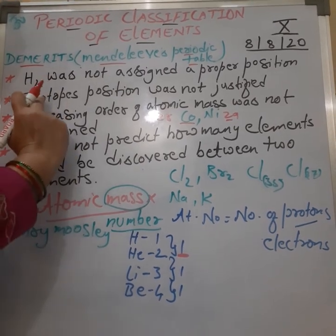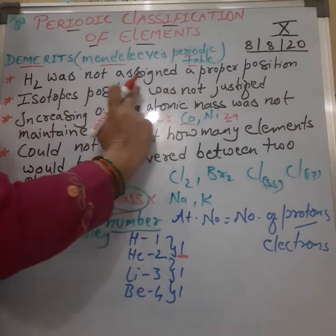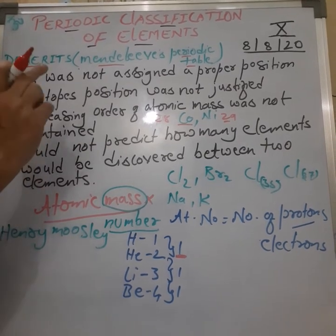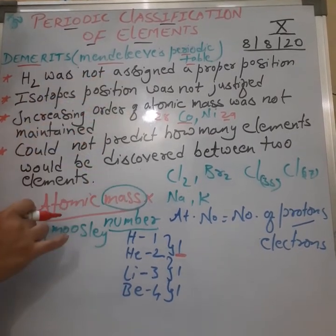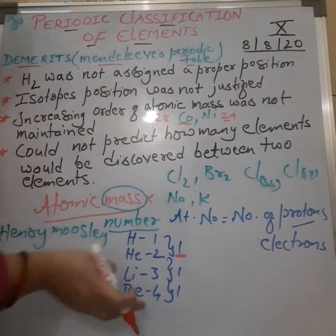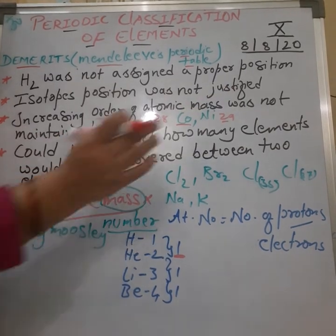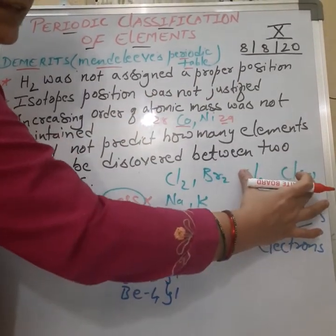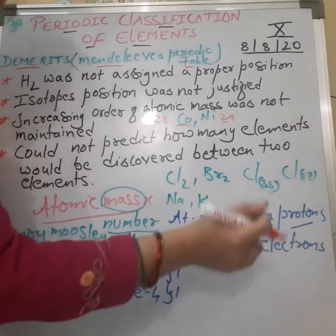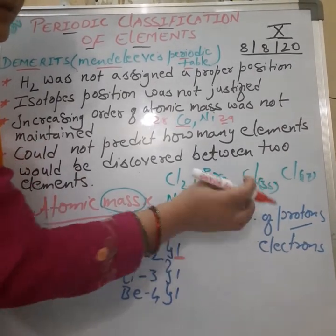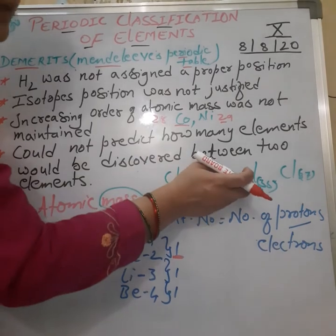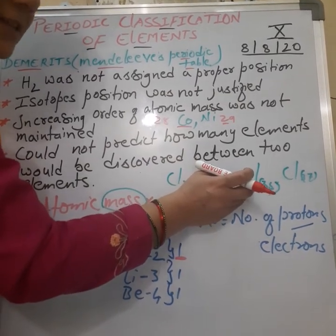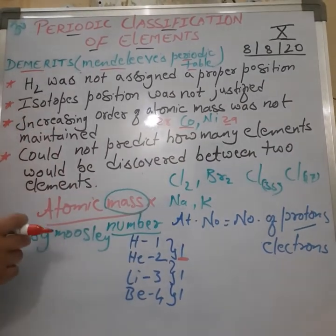Then another drawback: isotope position was not justified. Because isotopes have the same atomic number but different atomic mass, that problem was also solved. When Cl-35 and Cl-37 were placed in the same box, it was justified because chlorine's atomic number is 17 — which is the same for both Cl-35 and Cl-37.